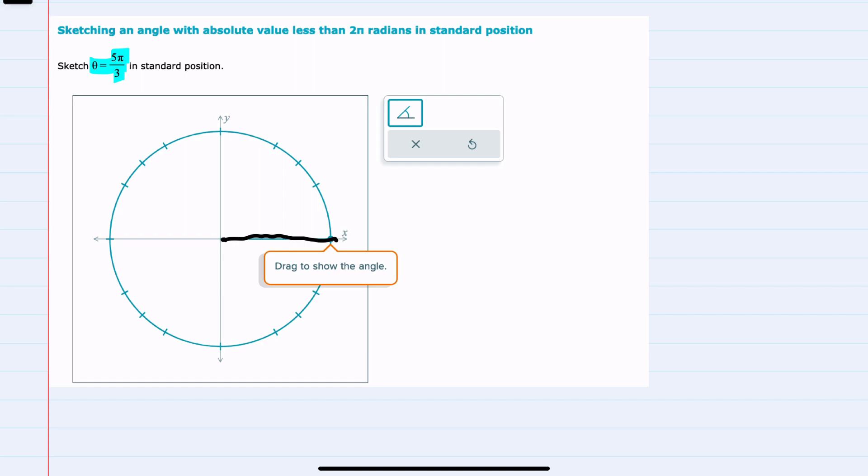Our units here are radians and in standard form, standard form meaning that we are going to move from the positive x-axis counterclockwise is positive and this θ is a positive value.